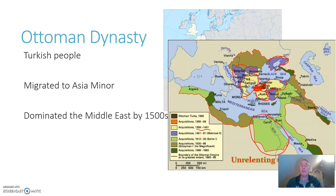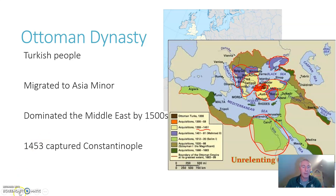Osman — the guy who founded this dynasty — his name in Arabic was Utman, and as Europeans incorrectly learned his name, they called them Ottomans, hence the name: the followers of what they thought was Utman. What really got the Ottomans' credibility as the power in the region, though, was the conquest of Constantinople.